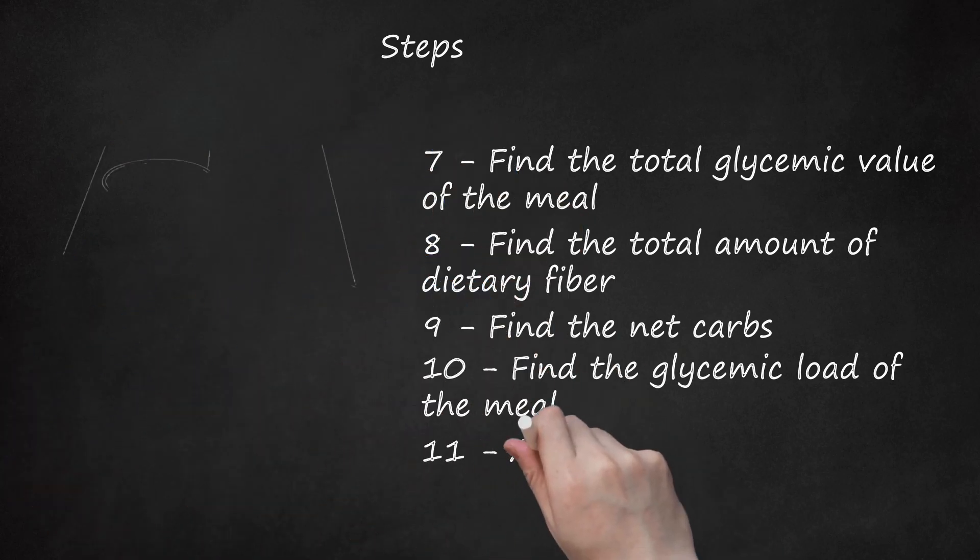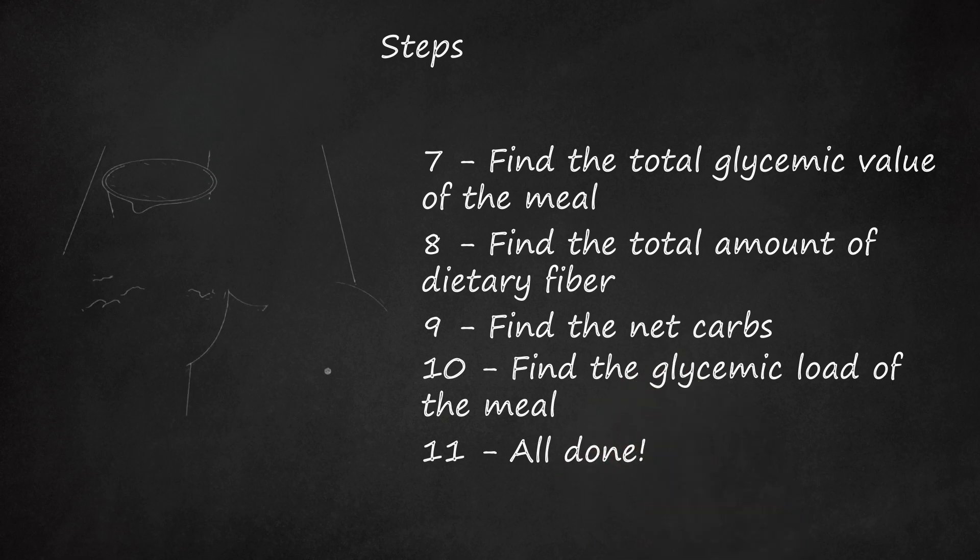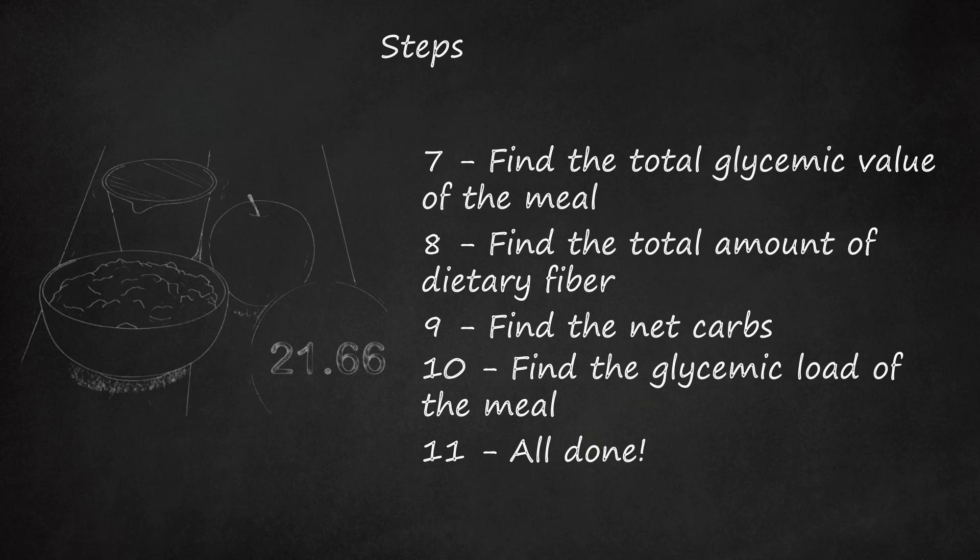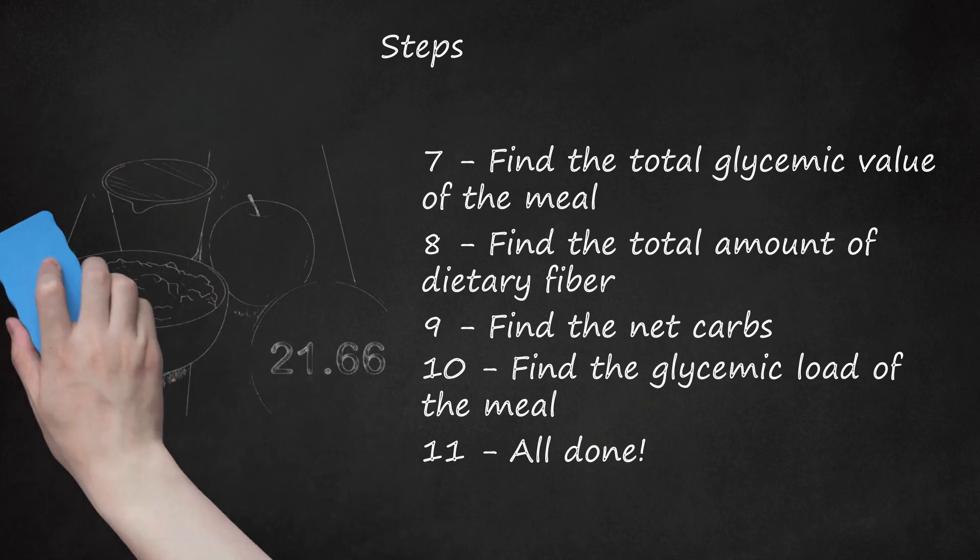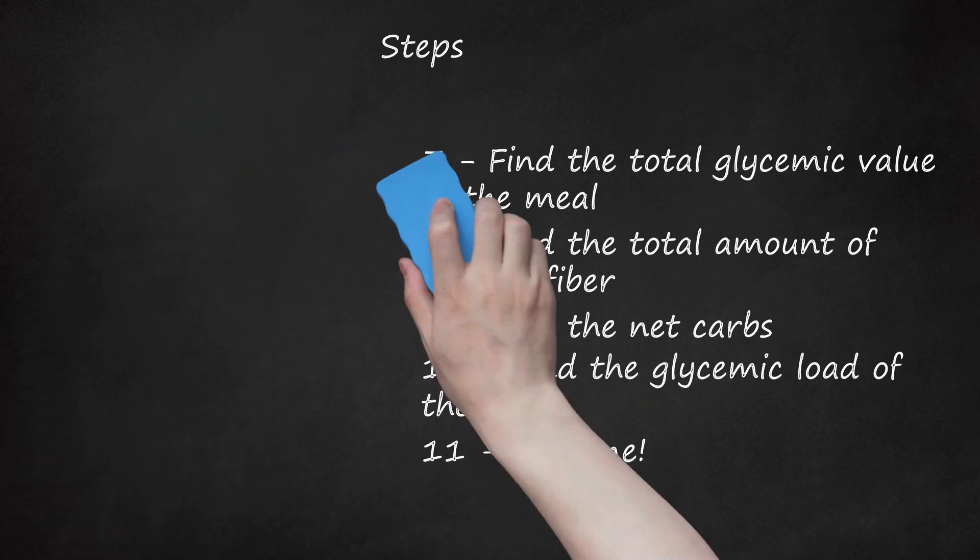Step 11: All done! You now know the glycemic load of the meal. A glycemic load of under 10 is considered low and any glycemic load of over 20 is considered high. In our example, the meal has a glycemic load of 21.66, which is considered high.